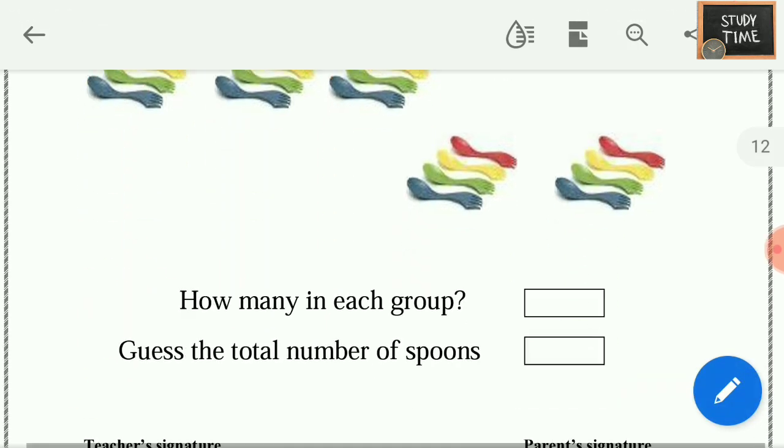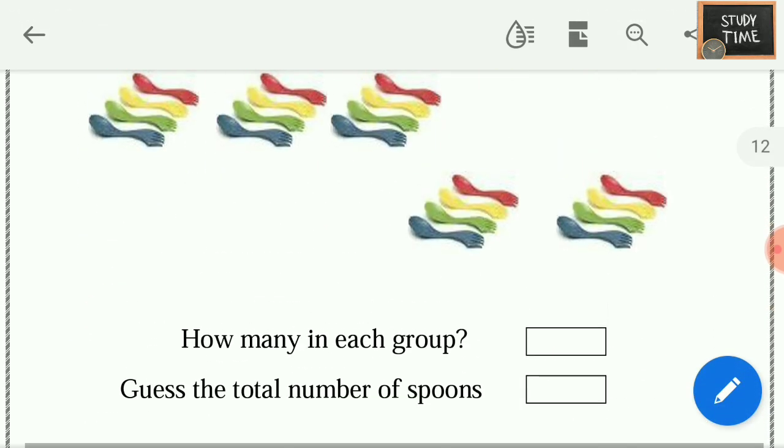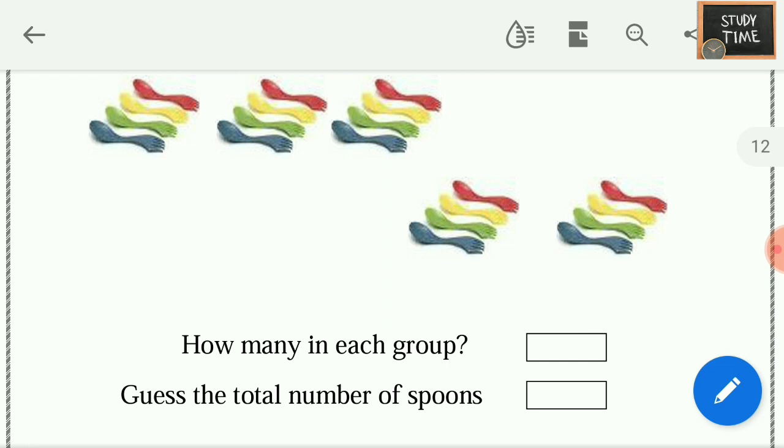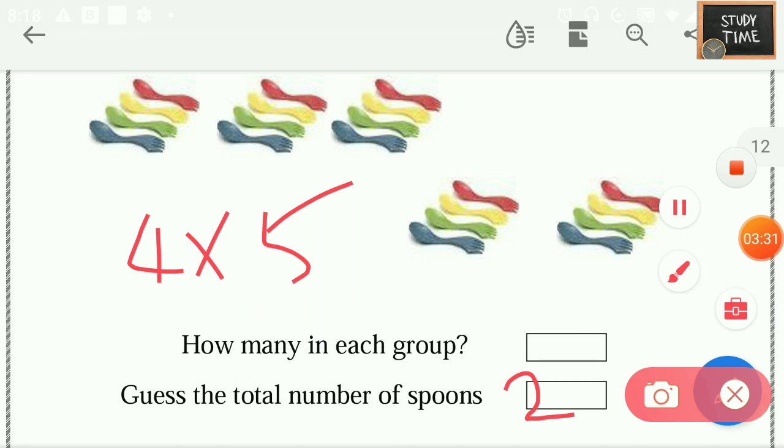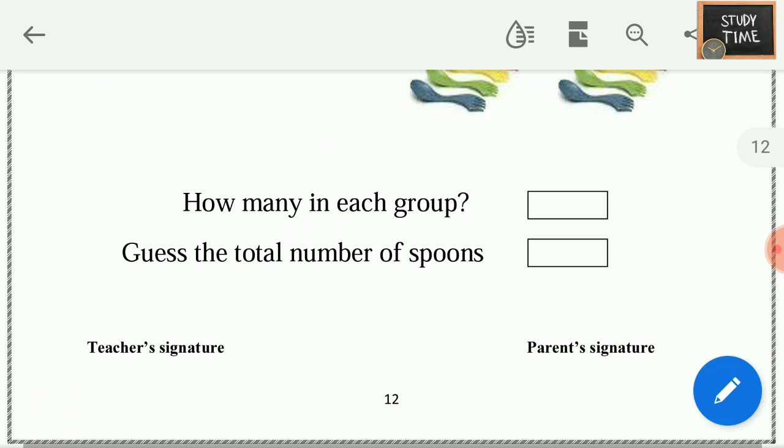Guess the total number of spoons. Here, 5 groups are there. Each group has 4 forks. So there are 4 into 5, 20 spoons are there.